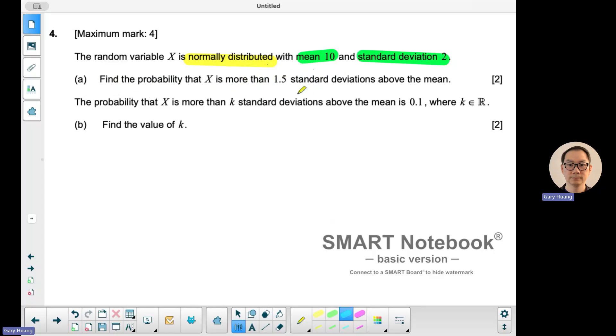But this one they didn't say 15, they say 1.5. But 1.5 what? 1.5 is 1.5 standard deviations above the mean. So there are two ways you can do this.